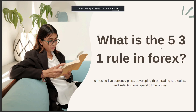Today's video I'll talk about what is the five three one rule in forex. The answer is: choosing five currency pairs, developing three trading strategies, and selecting one specific time of day.